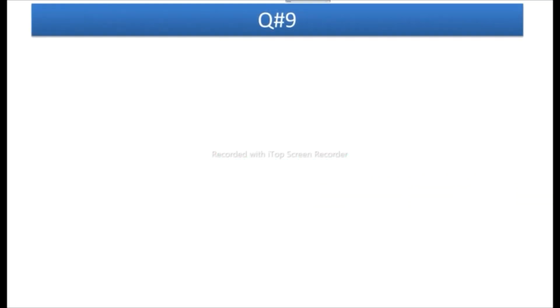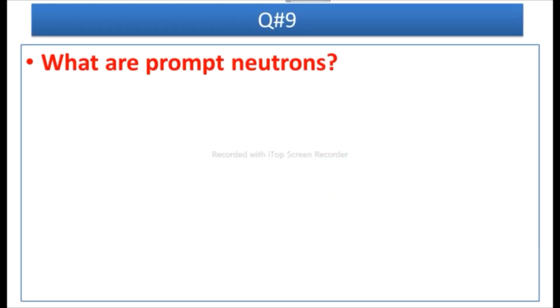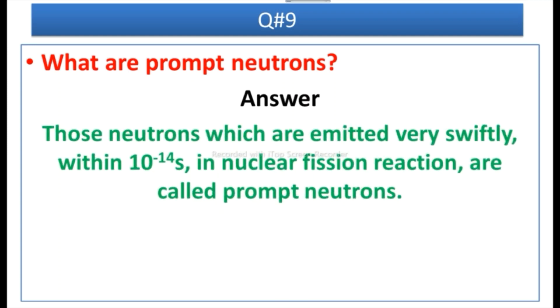Question number nine: What are prompt neutrons? Answer: Those neutrons which are emitted very swiftly, within 10 raised to the power minus 14 seconds, in nuclear fission reaction are called prompt neutrons.